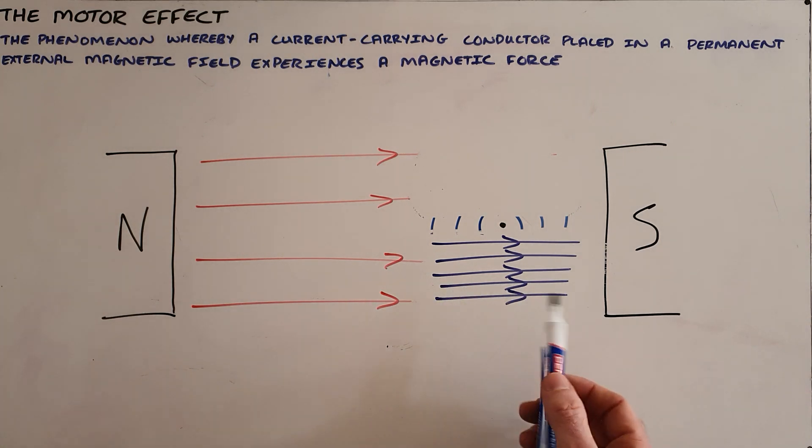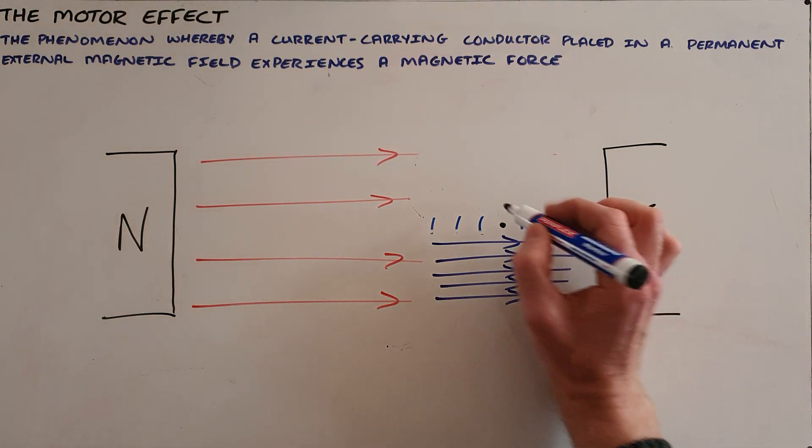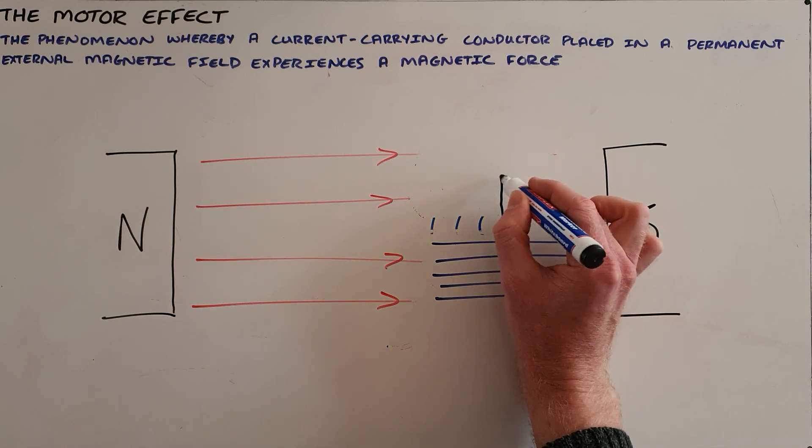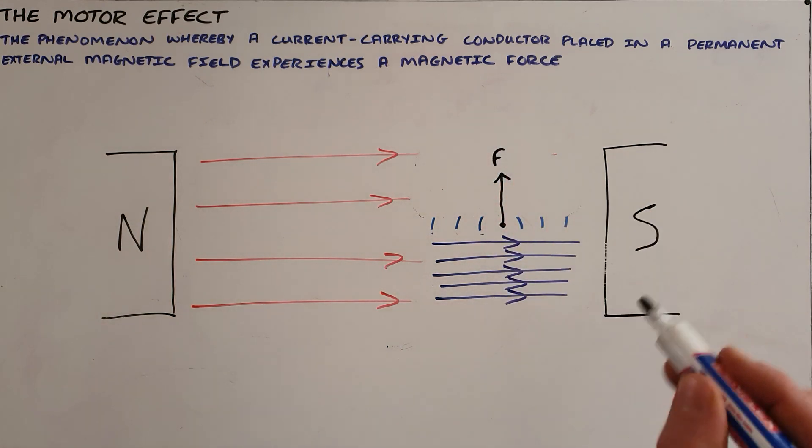Now, what we can see here is that when there is a very strong magnetic field beneath the wire and no magnetic field above it, we would create a force that exists upward on that wire that is sometimes referred to as the Lorentz force.